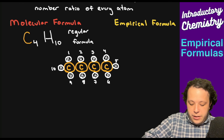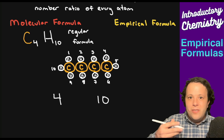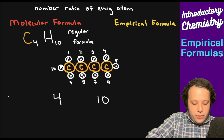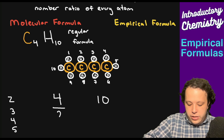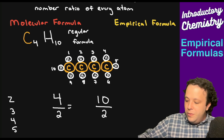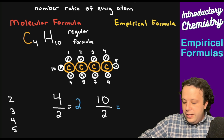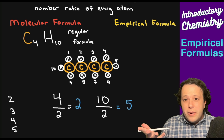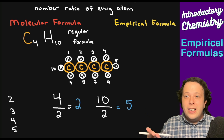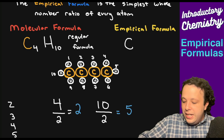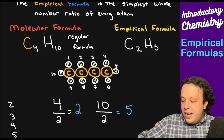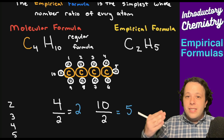We have four and ten, so what can you divide both those numbers by to simplify it? Generally, think of small numbers like two, three, four, five. Let's pick two. If I divide both these numbers by two, I get two and five. Could you divide by another number? Three and four don't work because this has to be the smallest whole number ratio. So by dividing by two, we end up getting C2H5, which is the empirical formula for this compound.